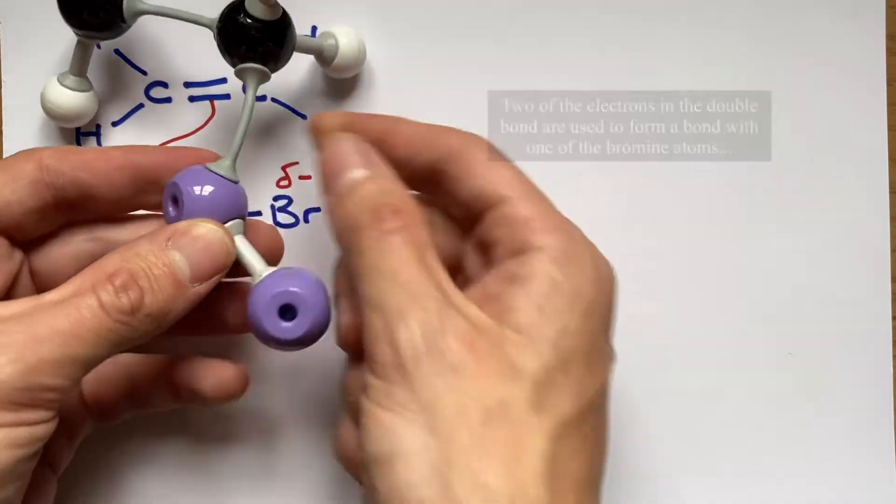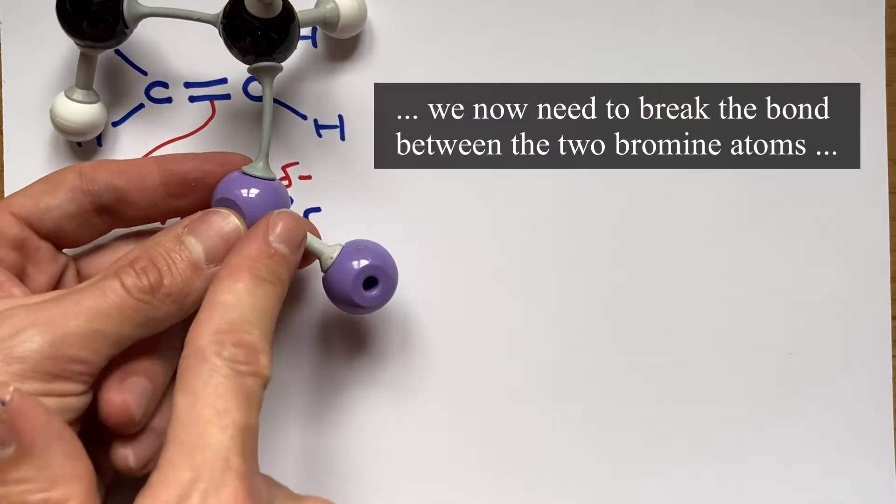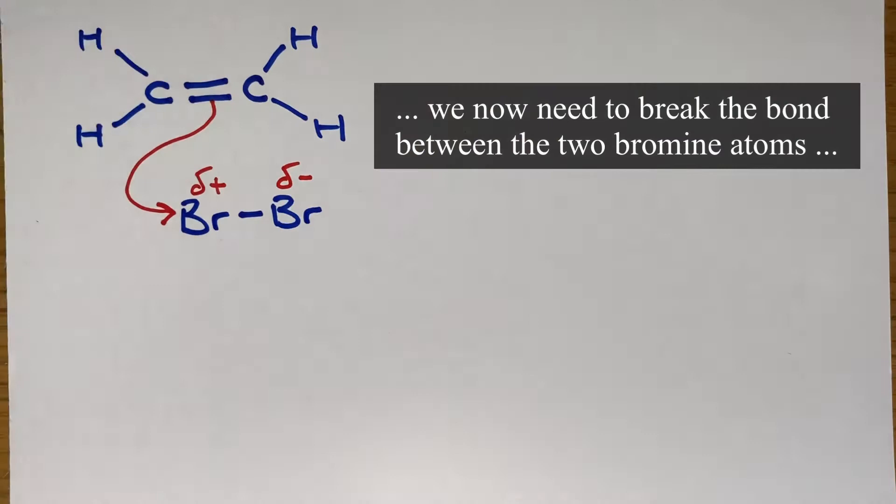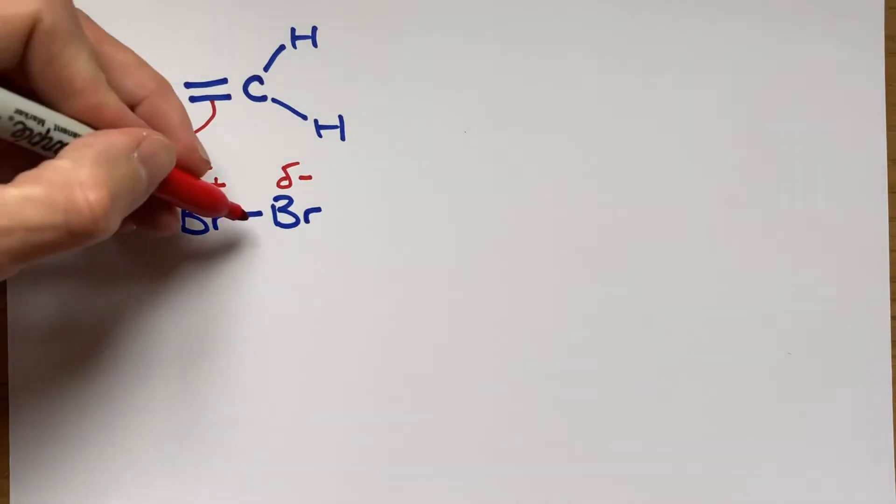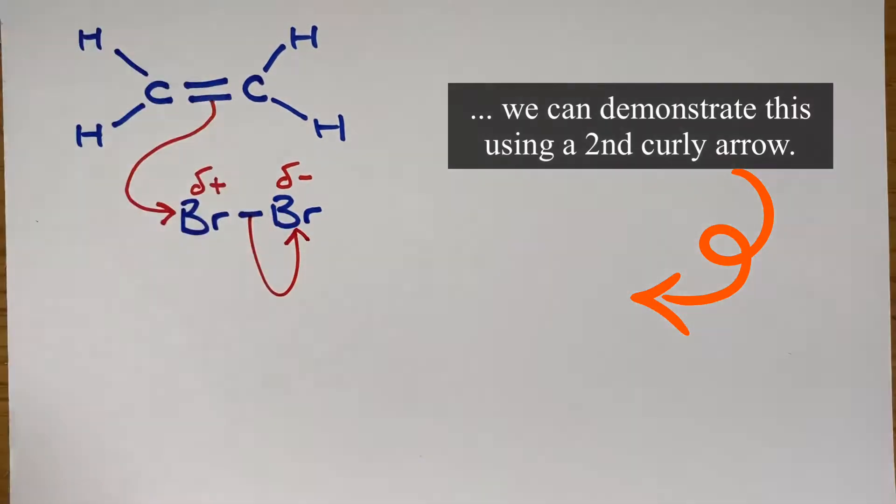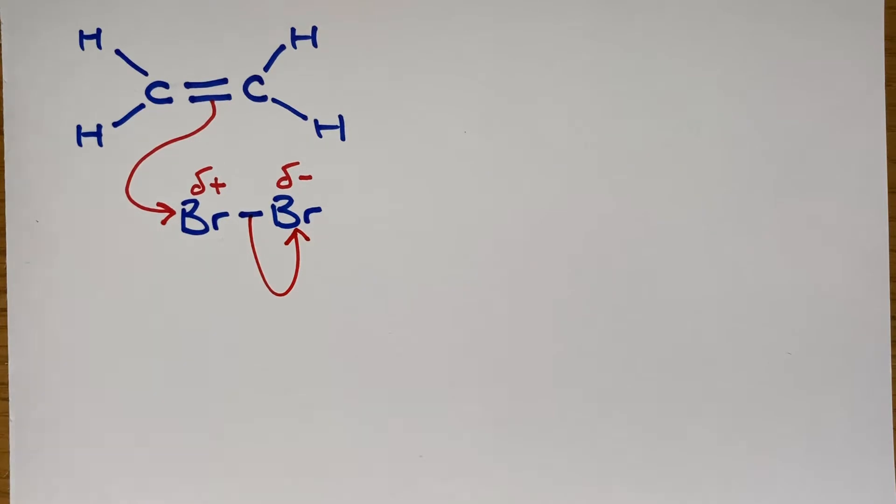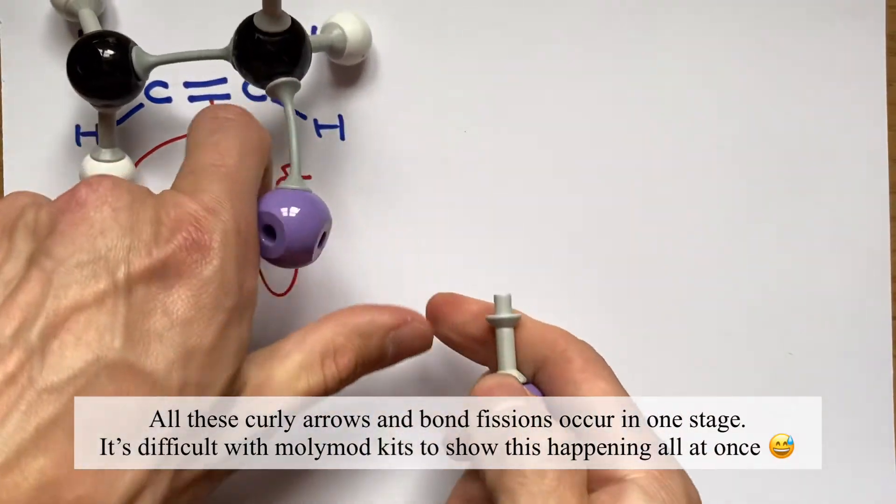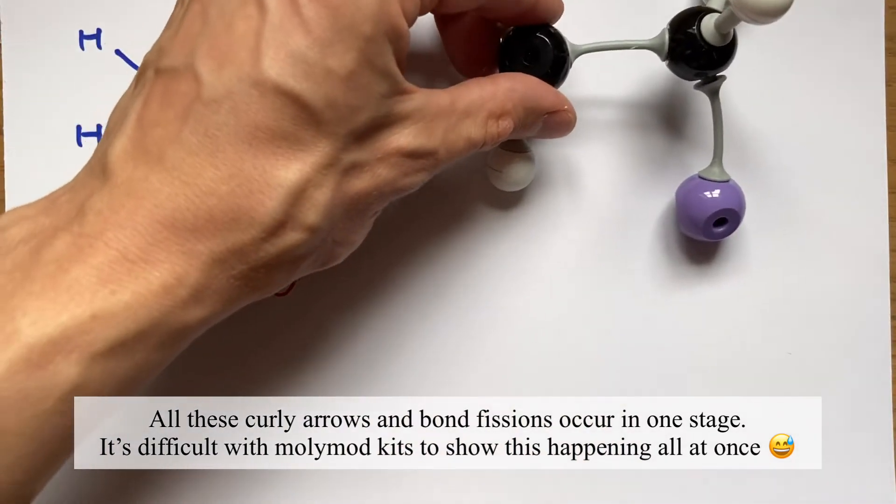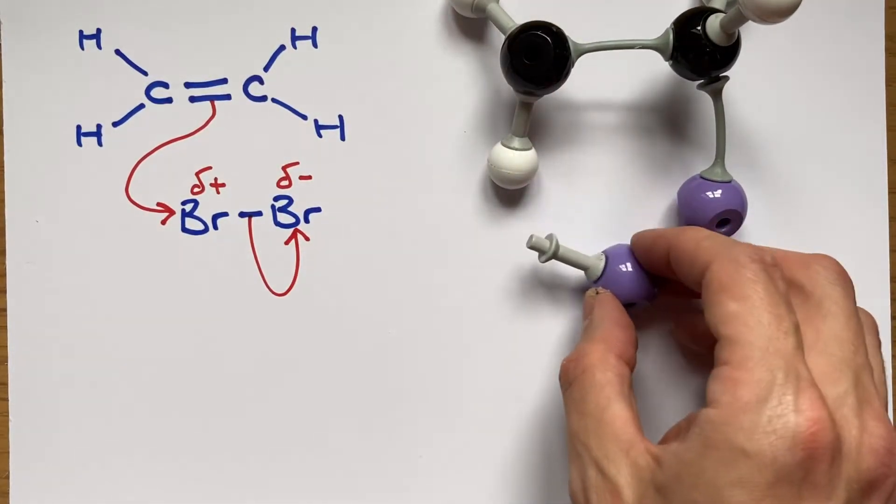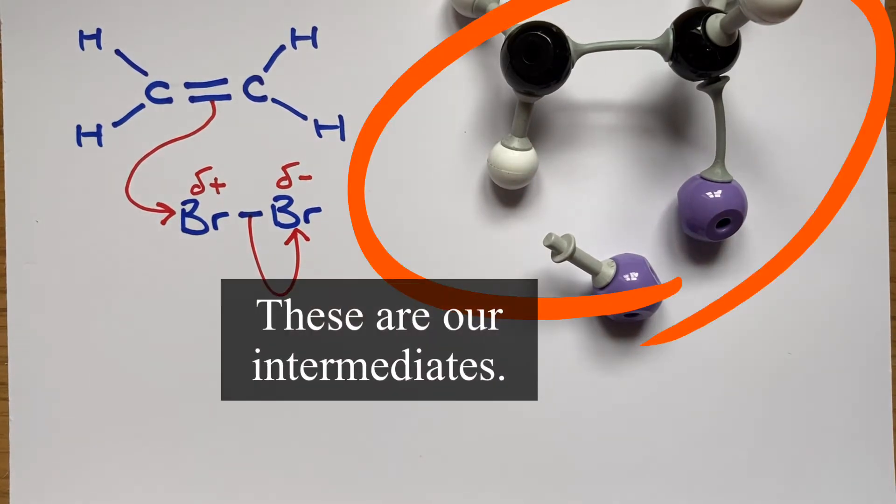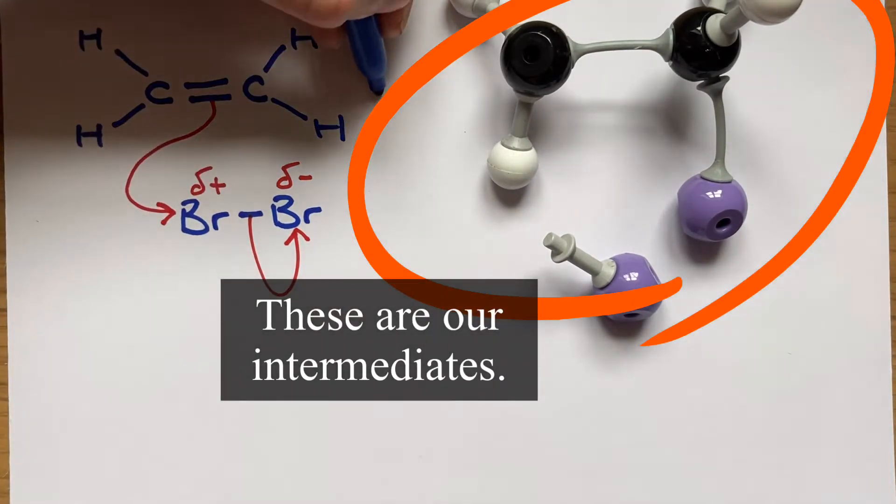Since the bromine that had the delta positive partial charge is now going to be bonded to one of the carbons in the original organic molecule, the other bromine with the delta minus charge is able to take the electrons here from this bond as it breaks heterolithically to create a bromide ion. It's quite difficult to show all of these stages happening in one step using the molly mod kit, but hopefully you get the idea that this all happens at once to create these two intermediates.